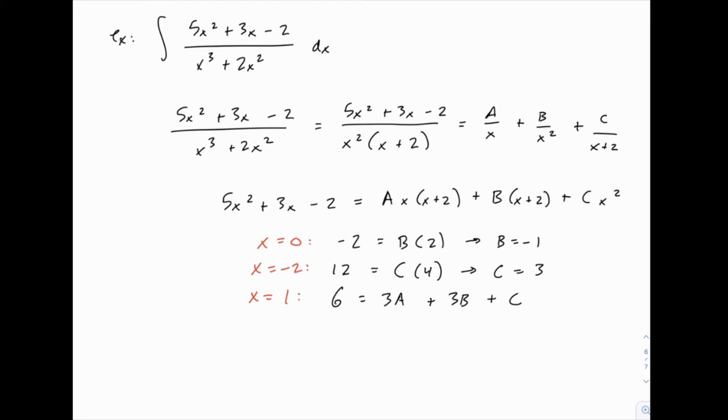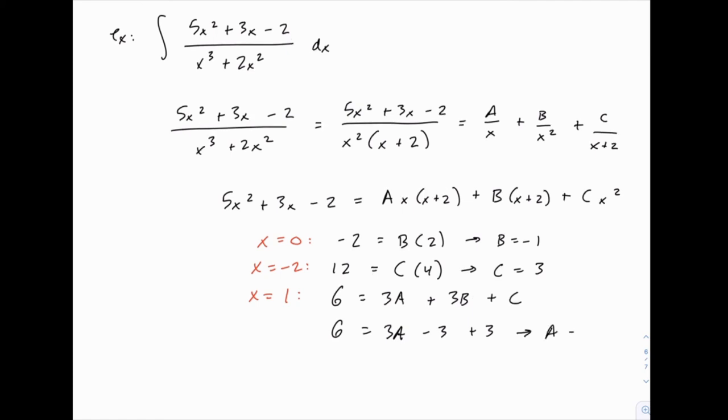And now that we know what B and C are, we know that 3B is going to be -3, and C is going to be positive 3. So those both cancel, and we have 6 = 3A, or A = 2.